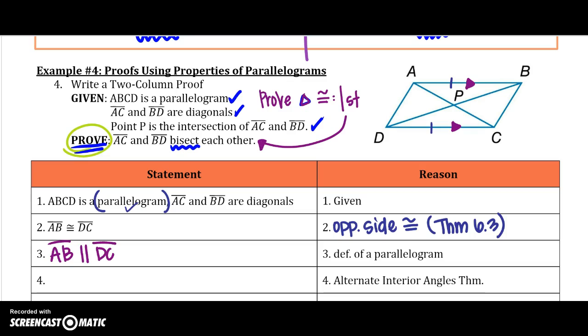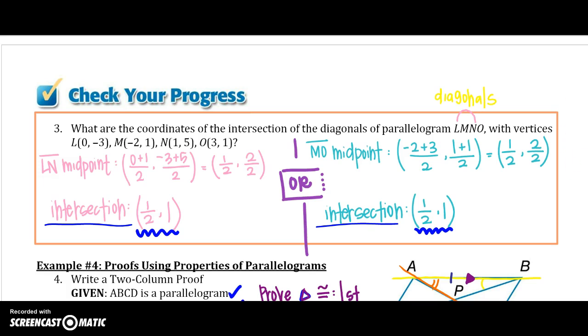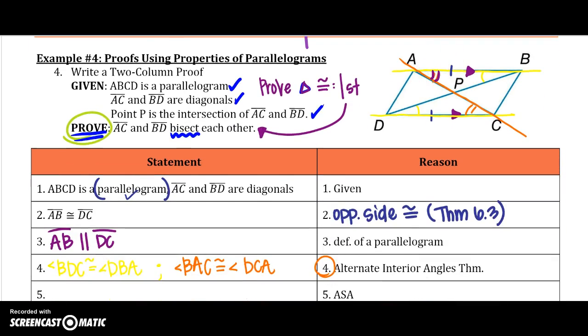Now remember, a parallelogram actually gives us, you can look at it as a transversal. So let's look at it maybe as something like this. There's our parallel lines. Let's just look at that one first. So we know alternate interior angles, angle BDC is congruent to angle DBA because of alternate interior angles. But we also know, if I change that transversal line, if I go this way with it, with the other diagonal, now I know that angle BAC is congruent to angle DCA because of alternate interior angles. Oh, now it's kind of taking shape. Because I have an angle, I have a side and an angle. I can prove triangle.